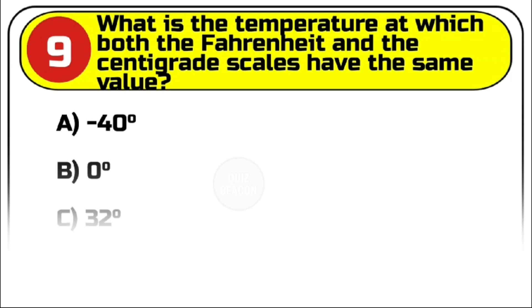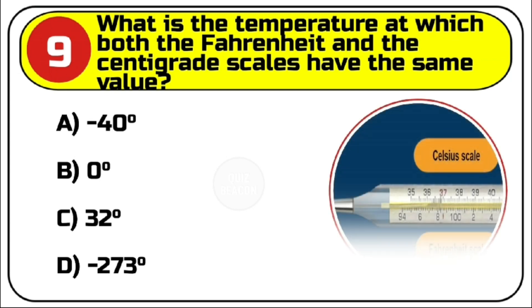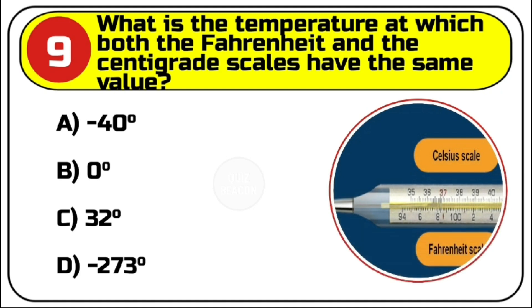Question number 9. What is the temperature at which both the Fahrenheit and the centigrade scales have the same value? Options are A. Minus 40 degrees. B. Zero degrees. C. 32 degrees. D. Minus 273 degrees.